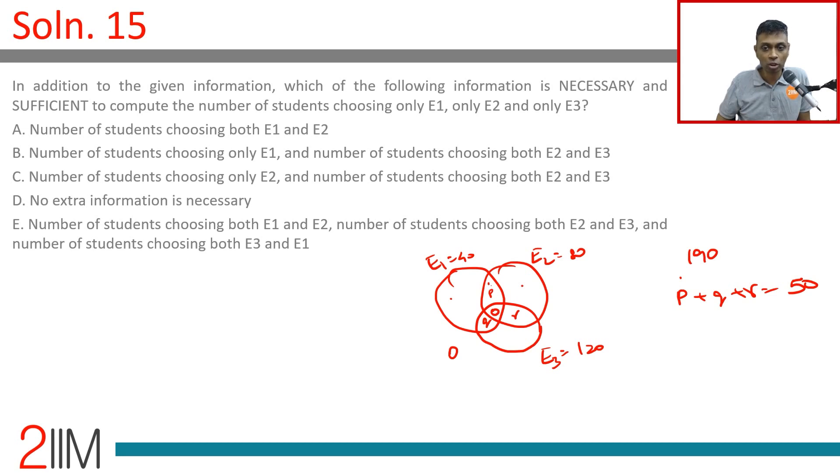Only E1, if we know this, we can find p plus q. Both E2 and E3, we know r, but p plus q and r are the same, not getting additional information. In the first statement this gives us p, this gives us r. Statement 3: number of students choosing only E2. If you know only E2, we know p and r, so we'll know q.